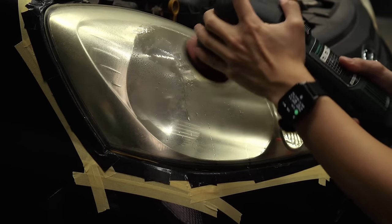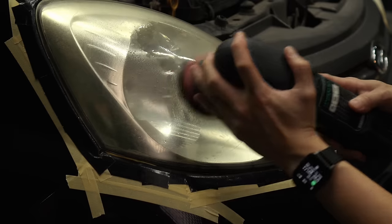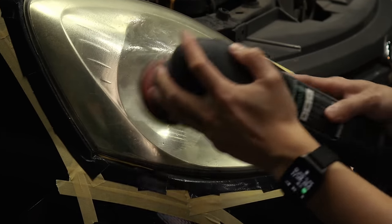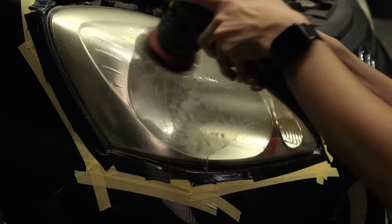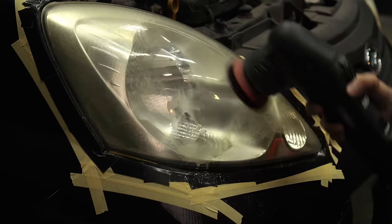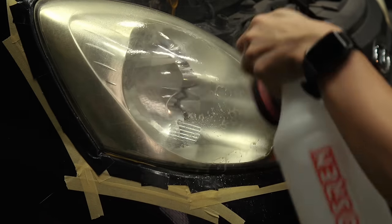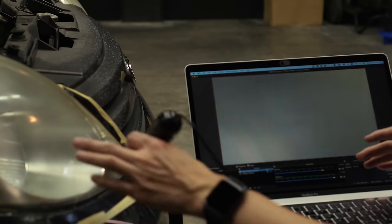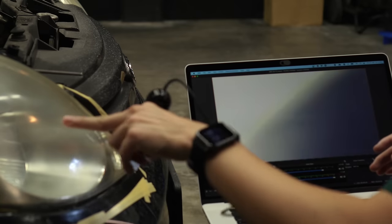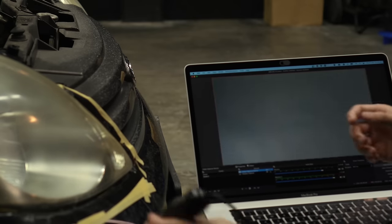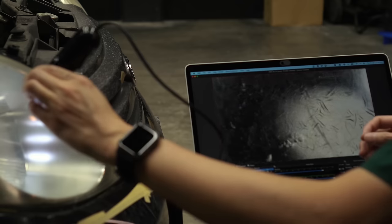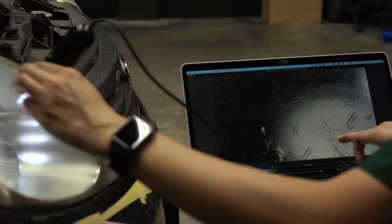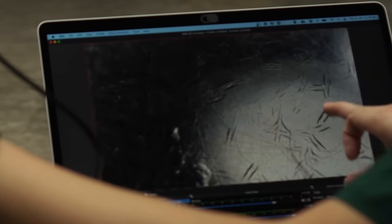I start off with a 2000 grit sanding disc to check whether it is sufficient in removing or reducing oxidation and plastic crazing. The yellow oxidized material could be easily removed as you can see the slurry turns from yellow to white. But let's take a closer look under the microscope and see if it is good enough. After sanding with 2000 grit on the DA polisher, let's see what we have up close. Perfect, this is exactly what I want to see.